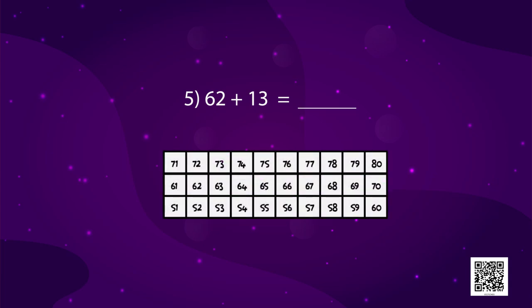One is 62 plus 13. So, here is the number 62. We first add 10 by moving one step upwards. And we reach which number? 72. And then, we move three steps forward. 73, 74. And then, we reach 75. So, 62 plus 13 is 75.